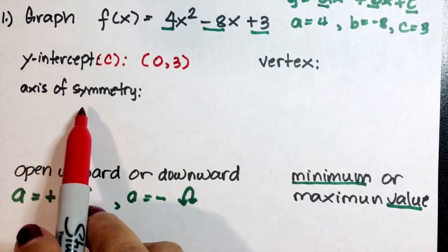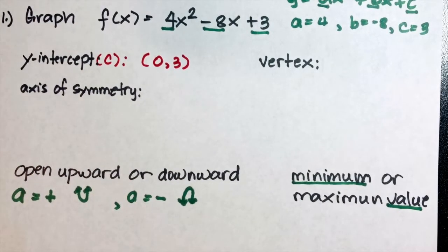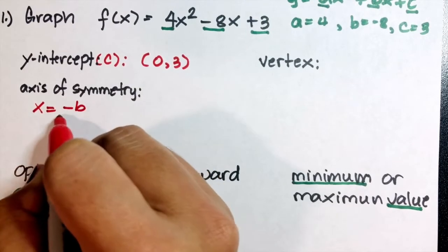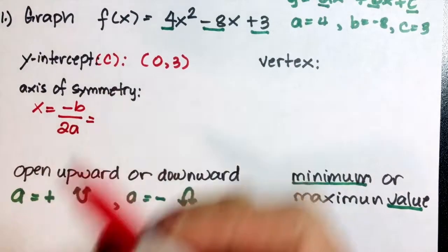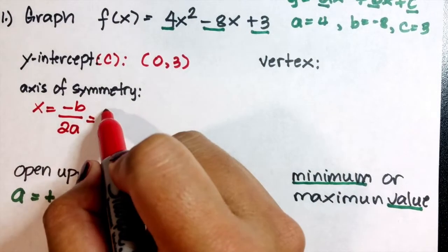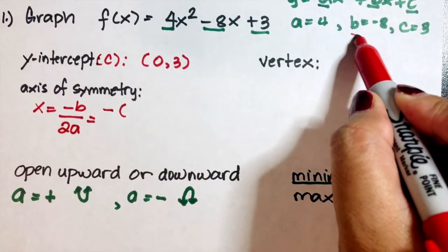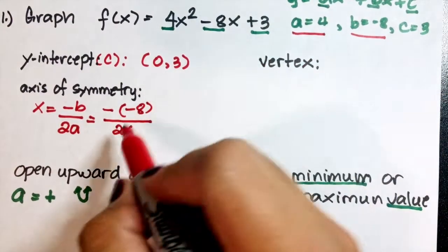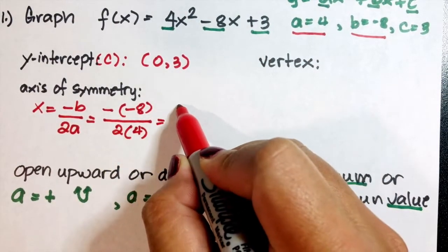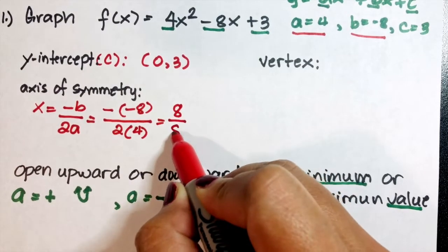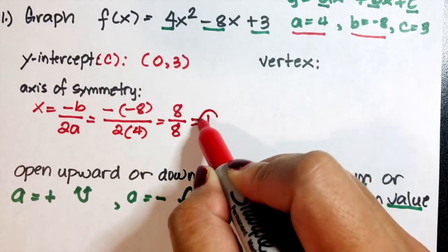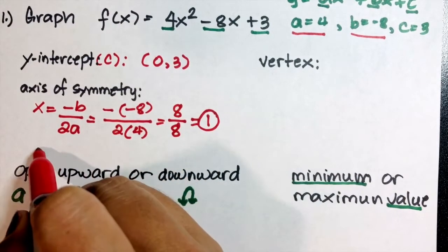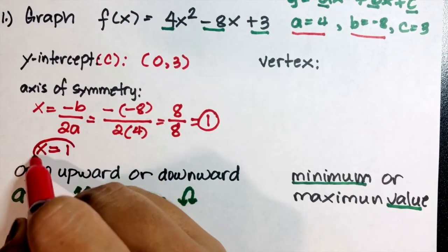How about the axis of symmetry, or line of symmetry? Use the formula x = -b / 2a. Plugging in b = -8 and a = 4: negative of negative 8 is positive 8, and 2 times 4 is 8, so 8 divided by 8 equals positive 1. Our axis of symmetry is x = 1.